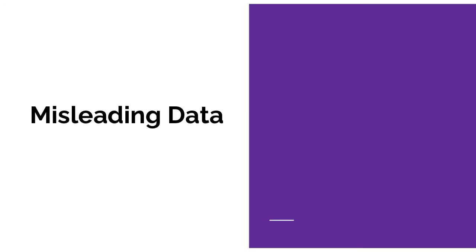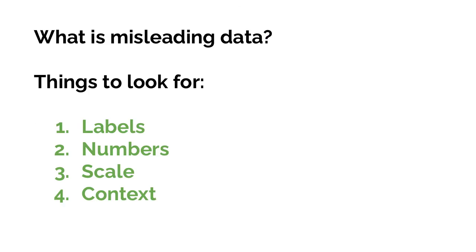What we're going to start with is talking about misleading data. When we're looking at graphs and trying to determine whether or not data can be misleading, there are a few different things to look for. First, we're going to look at the labels. Second, the numbers. Third, the scale. And fourth, the context. Being able to identify misleading data is a very important skill.